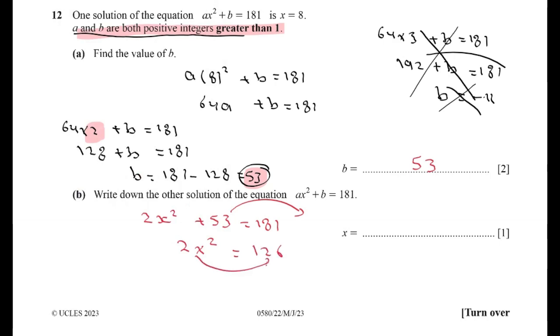Divided by 2: x² = 64. x equals square root of 64, which is 8 and negative 8. 8 is given. Then the other answer is negative 8.